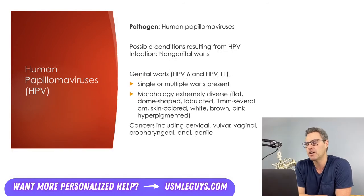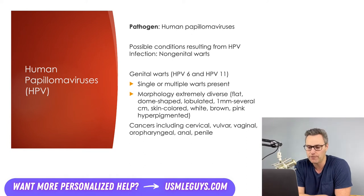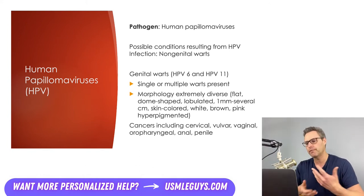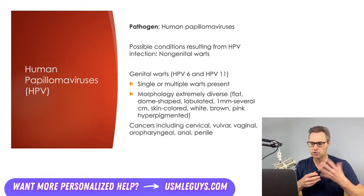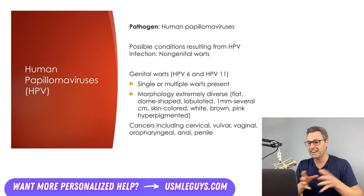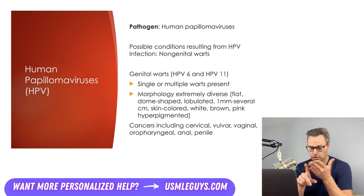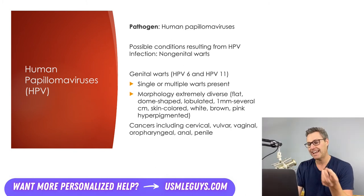Next up, we have HPV, which can result in non-genital or genital warts. Genital warts are typically caused by infection with HPV strains 6 and 11, and can manifest as single or multiple warts with an extremely diverse presentation — shapes ranging from flat, cauliflower, dome, fungating, pedunculated, cerebriform, and lobulated. HPV is also implicated in causing cancers like cervical, vulvar, vaginal, oropharyngeal, anal, and penile.